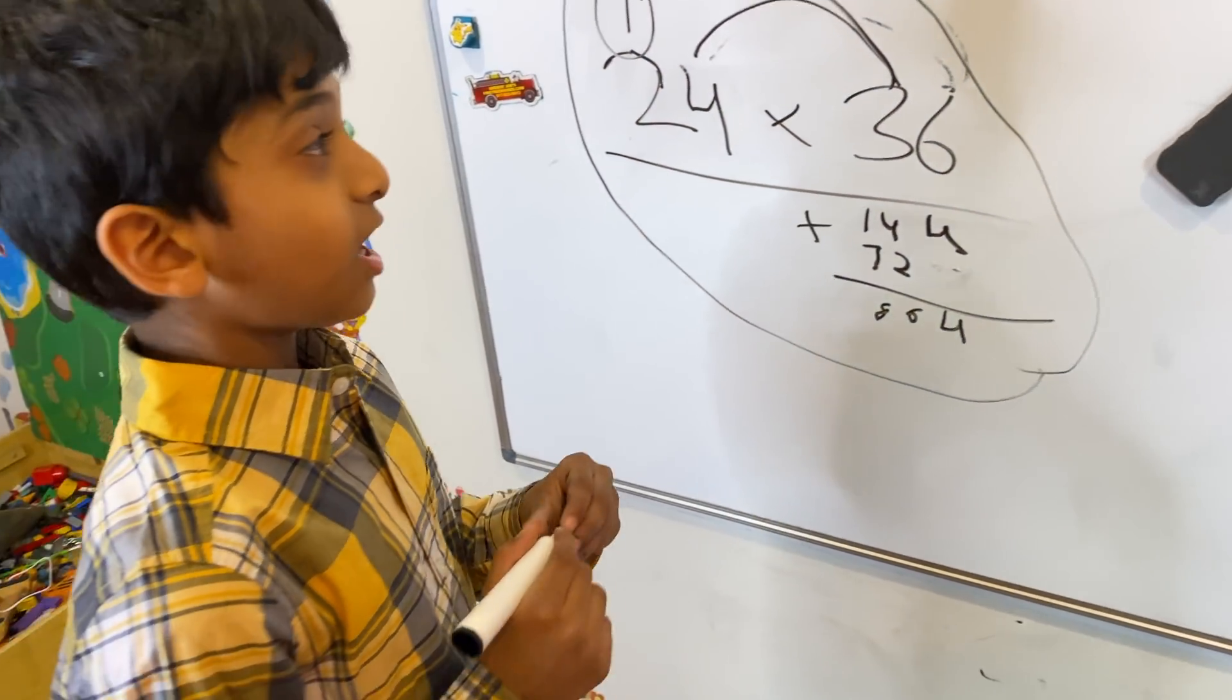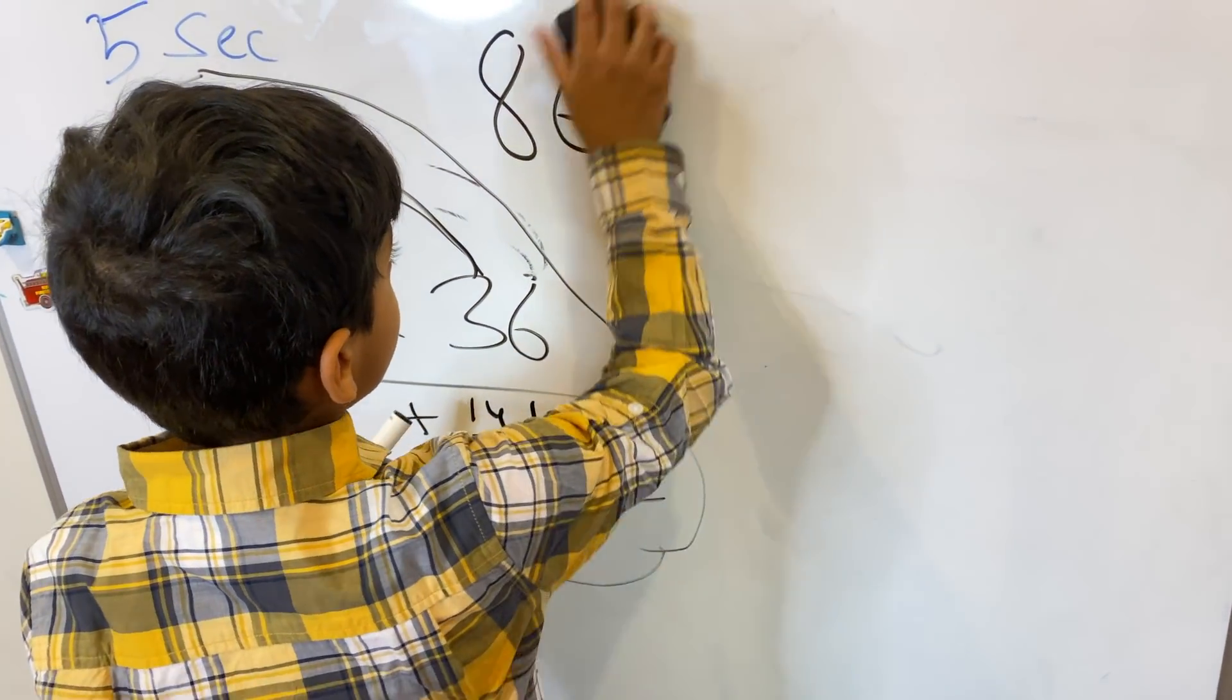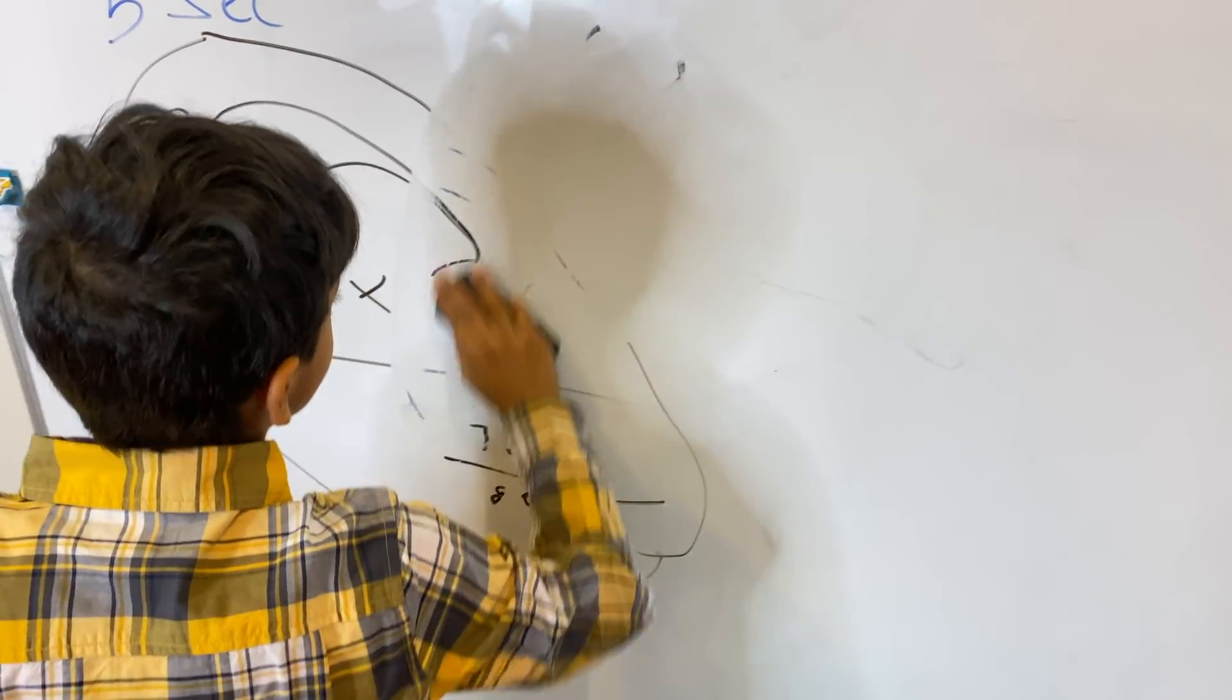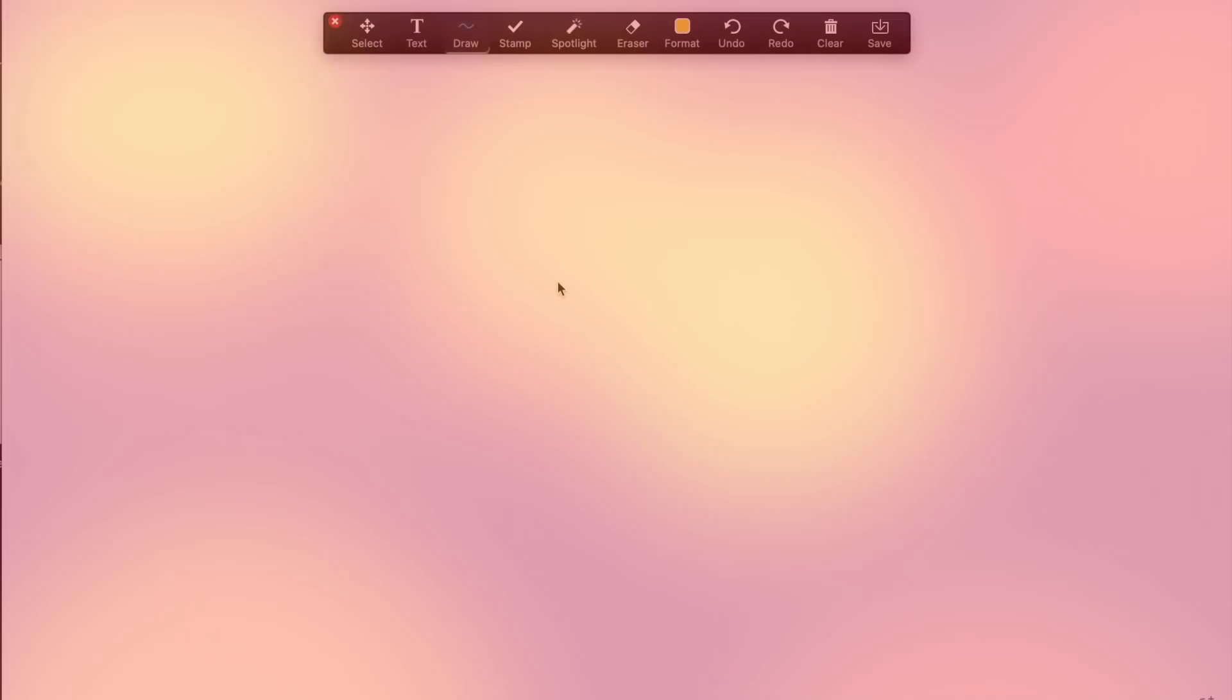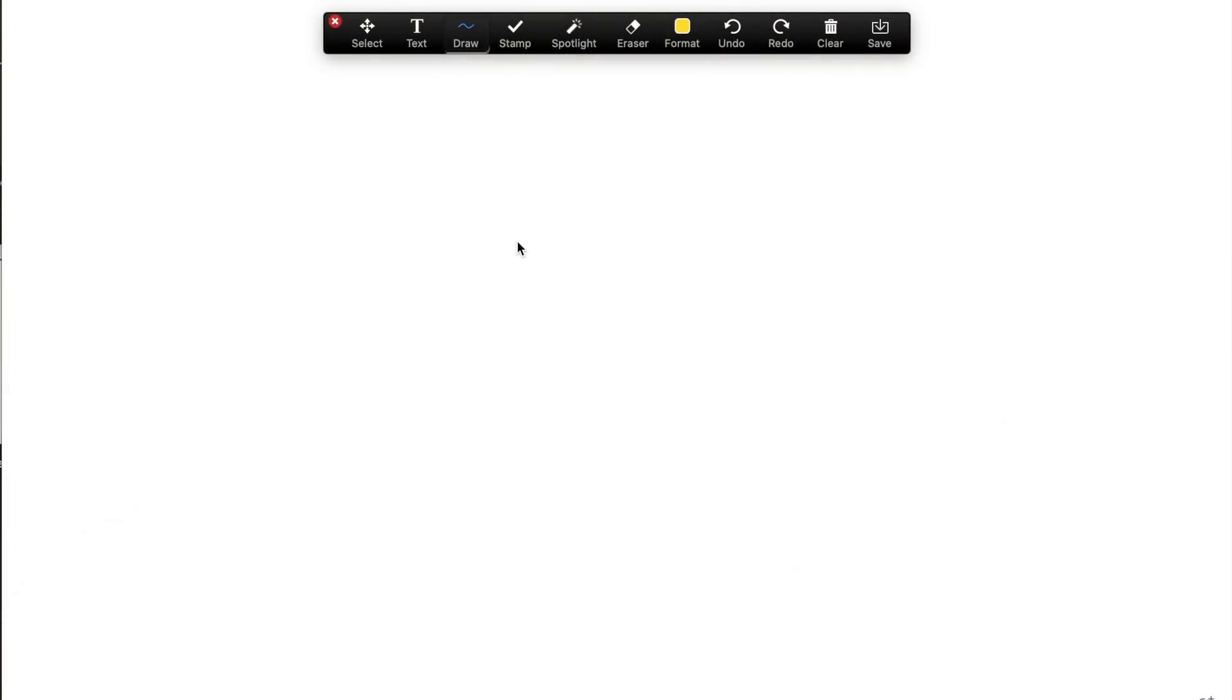But now I'll show you a way easier way. You erase all this. Let's start with a simple example to show the trick on multiplying any 2-digit numbers.